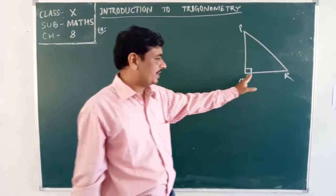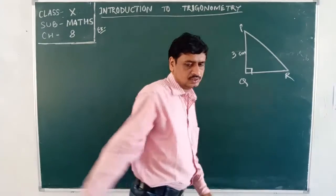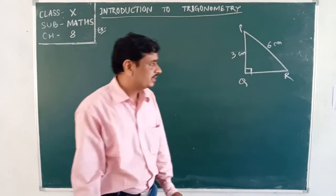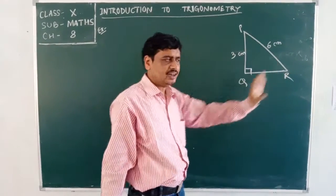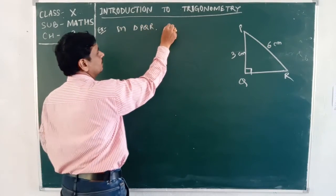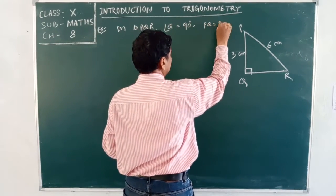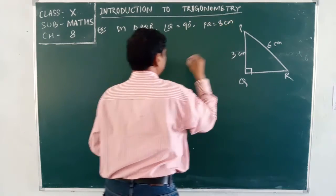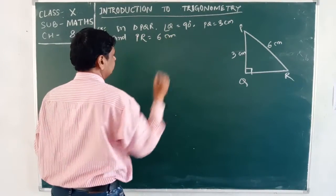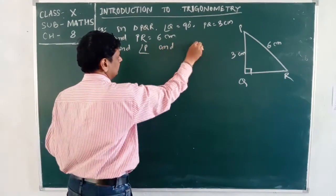Next example: In triangle PQR, angle Q is 90°, PQ is given as 3 cm, and PR is 6 cm. We have to find the measure of angle P and angle R.